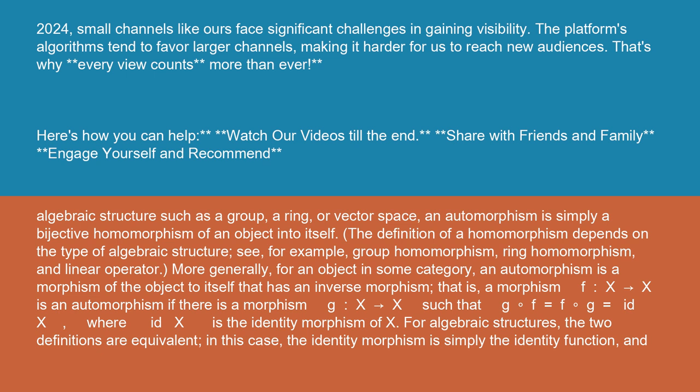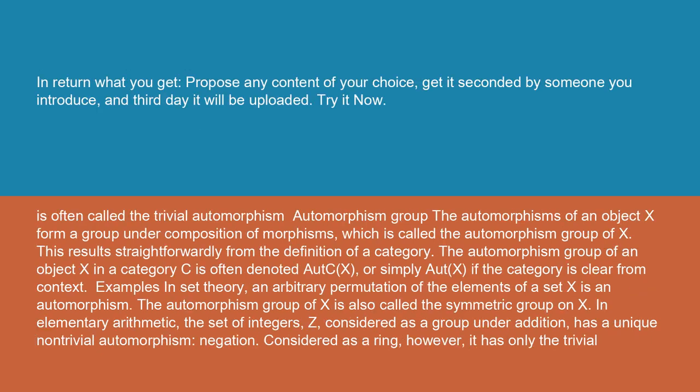For algebraic structures, the two definitions are equivalent. In this case, the identity morphism is simply the identity function and is often called the trivial automorphism.